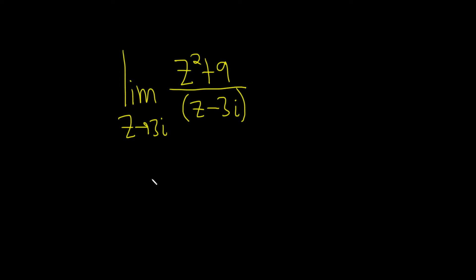Hi everyone, in this problem we're going to find the limit as z approaches 3i of z squared plus 9 over z minus 3i.